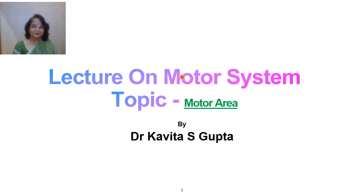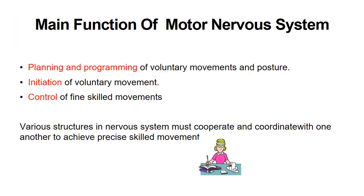Today's lecture on the motor system covers the topic of motor areas. The main function of the motor nervous system is to provide purposeful, precise, skilled movement. This involves planning and programming of voluntary movement, initiation or execution of voluntary movement, and control of fine skill movement. These four points — planning, programming, initiation, and control — are responsible for precise, skilled, purposeful movement.